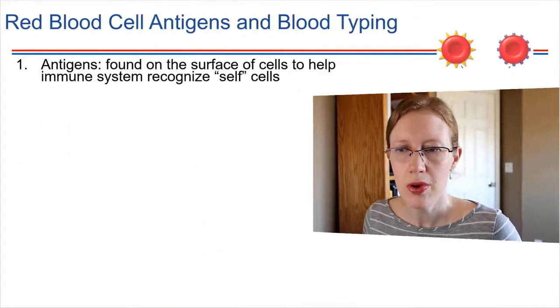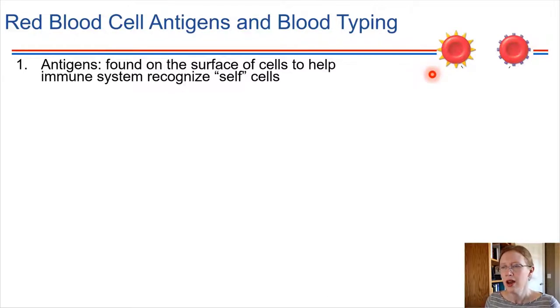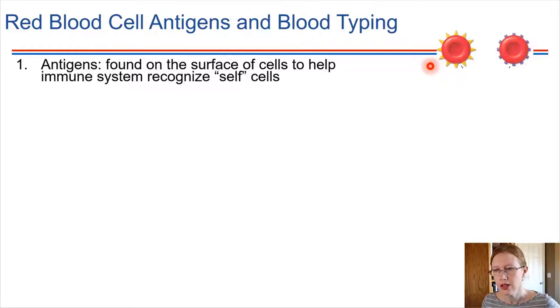Let's talk about blood typing. Each of us has a specific blood type — it could be A positive, B negative. What those different blood types are referring to are the carbohydrates that are present on the surface of red blood cells. On the surface we've got these carbohydrates, and those carbohydrates have an important interaction with the immune system.